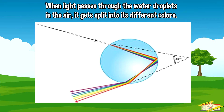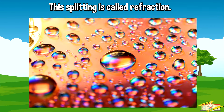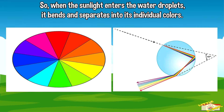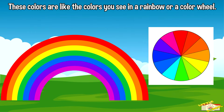When the light passes through the water droplets in the air, it gets split into its different colors. This splitting is called refraction. So when the sunlight enters the water droplets, it bends and separates into its individual colors: red, orange, yellow, green, blue, indigo, and violet. These colors are like the colors you see in a rainbow or a color wheel.